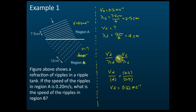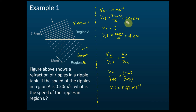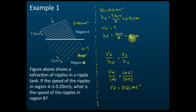The answer is 0.32 m/s. Let's list the information. In region A, the shallower region, speed vs = 0.2 m/s. Three wavelengths equal 7.5 cm, so lambda equals 7.5 divided by 3 = 2.5 cm. For the deeper region, we don't know the speed — that's what we want to find. Three wavelengths equal 12 cm, so lambda equals 12 divided by 3 = 4 cm.